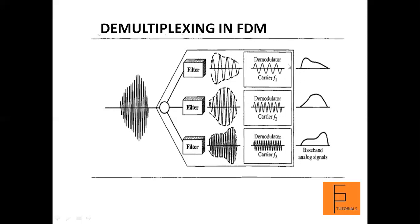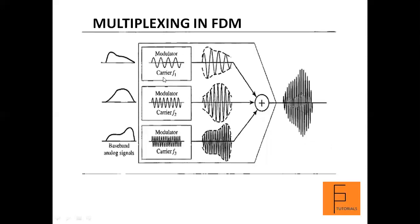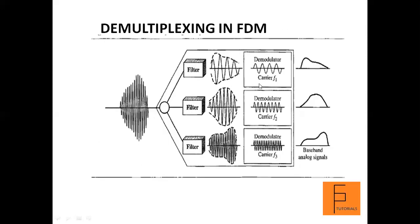These constituent component signals are fed to the demodulators. The demodulator takes out the carrier frequency and regenerates the original baseband analog signals. The demodulator uses the same carrier frequency as was used in the modulator — for instance, the modulator that used carrier frequency F1 will have a demodulator using F1 at the receiving end. In this way, the transmission using multiplexing and demultiplexing is completed. Multiplexing takes place at the sending end and demultiplexing at the receiving end.